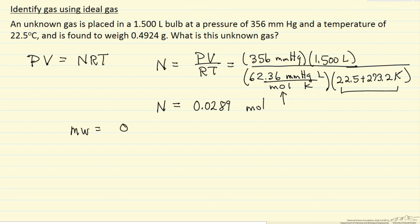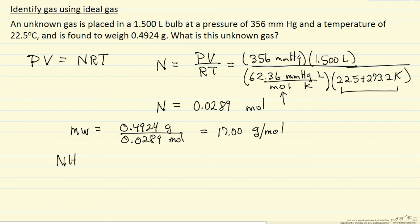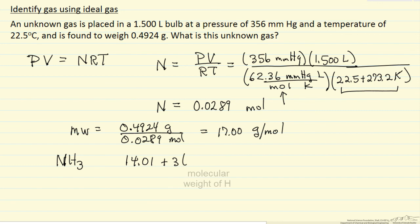The molecular weight is the number of grams per mole. A molecule with a molecular weight of 17 grams per mole — the most likely one is ammonia: 14.01 plus 3 times 1.008, which is slightly more than 17. Within this accuracy, the most likely gas is ammonia.